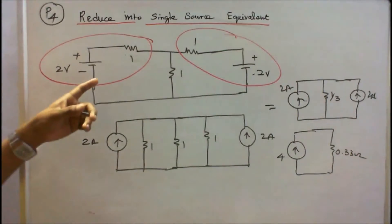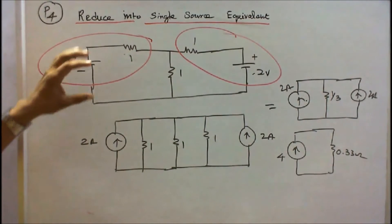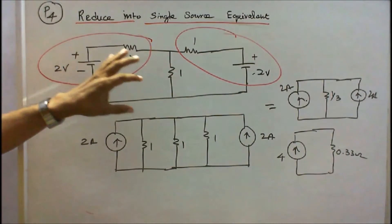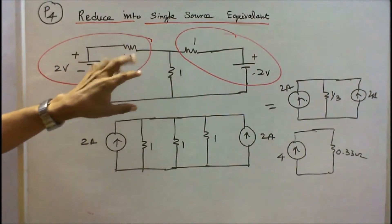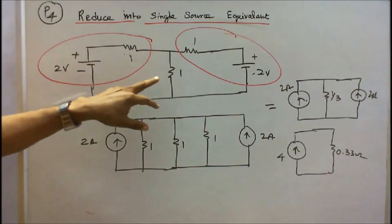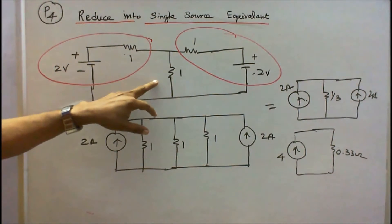Problem number 4. Two voltage sources are connected as shown in the figure, with a 1 ohm resistor connected in between.